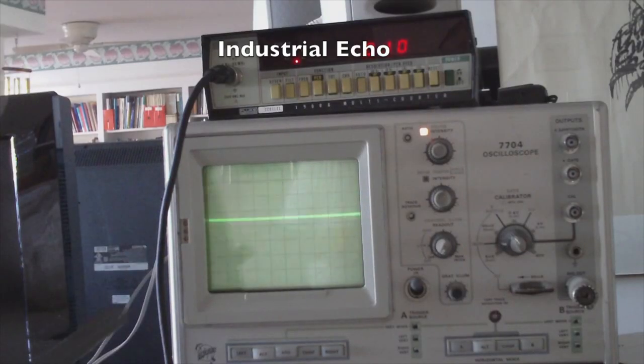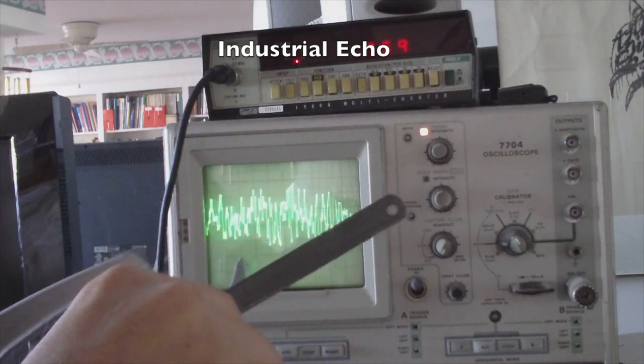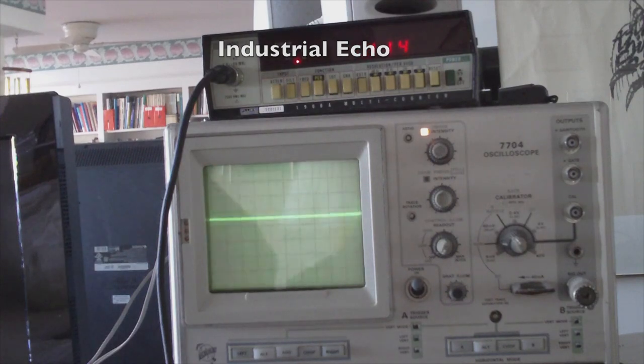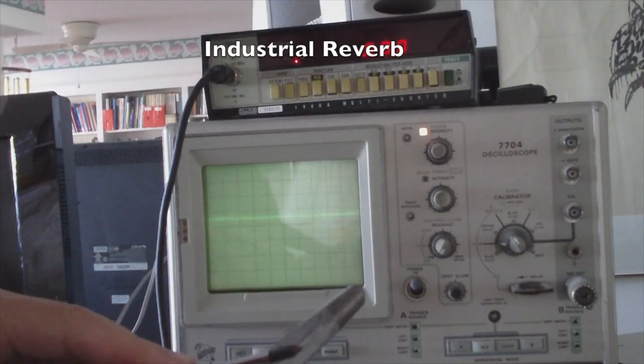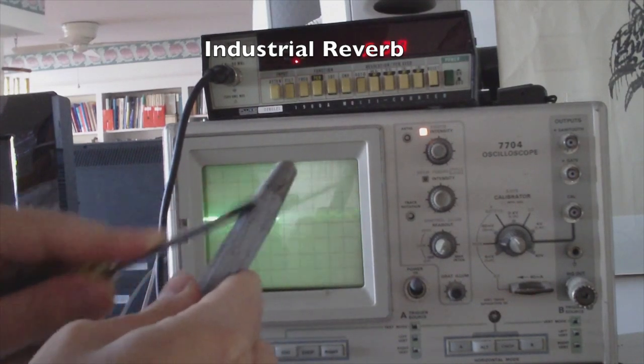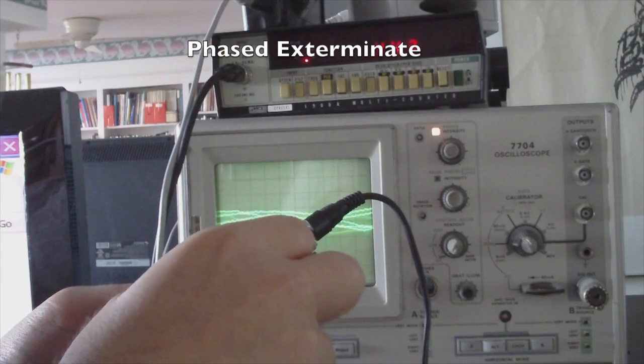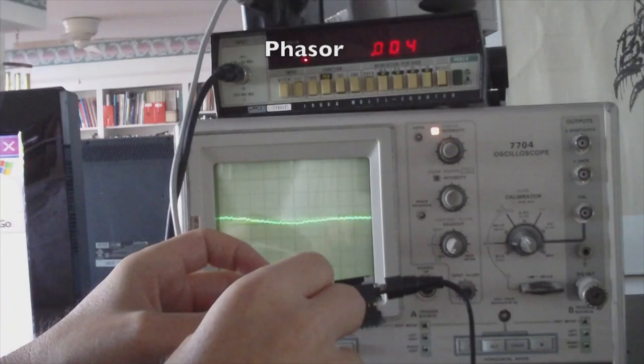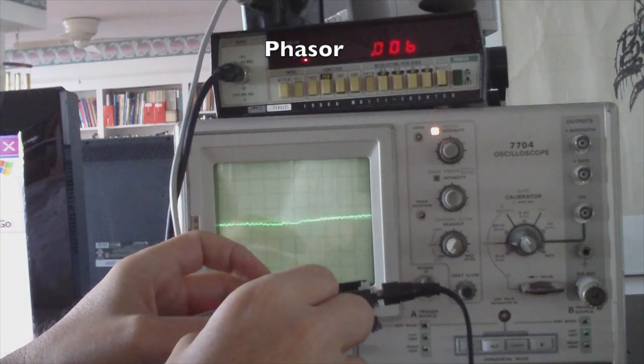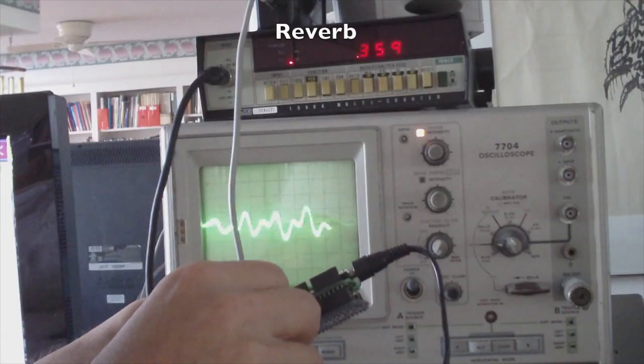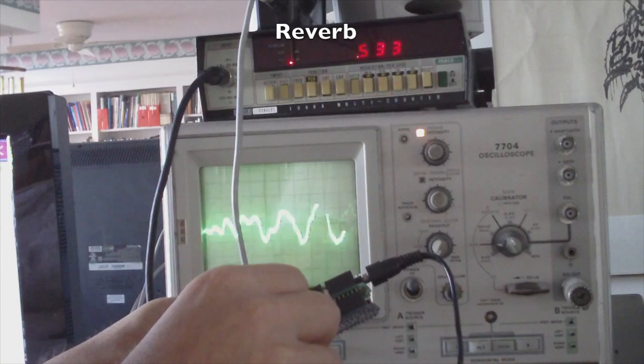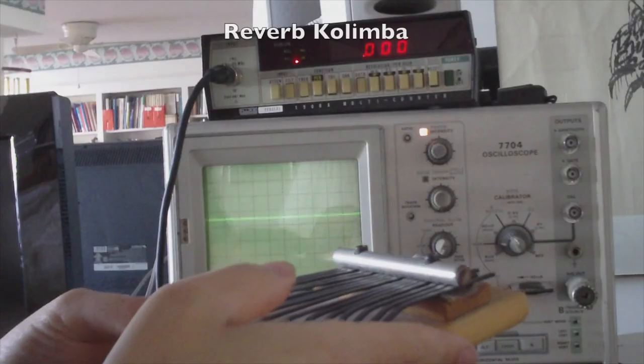Too much echo with the DSP Shield. Industrial music with reverb and the Arduino DSP shield. Now reverb with the kalimba.